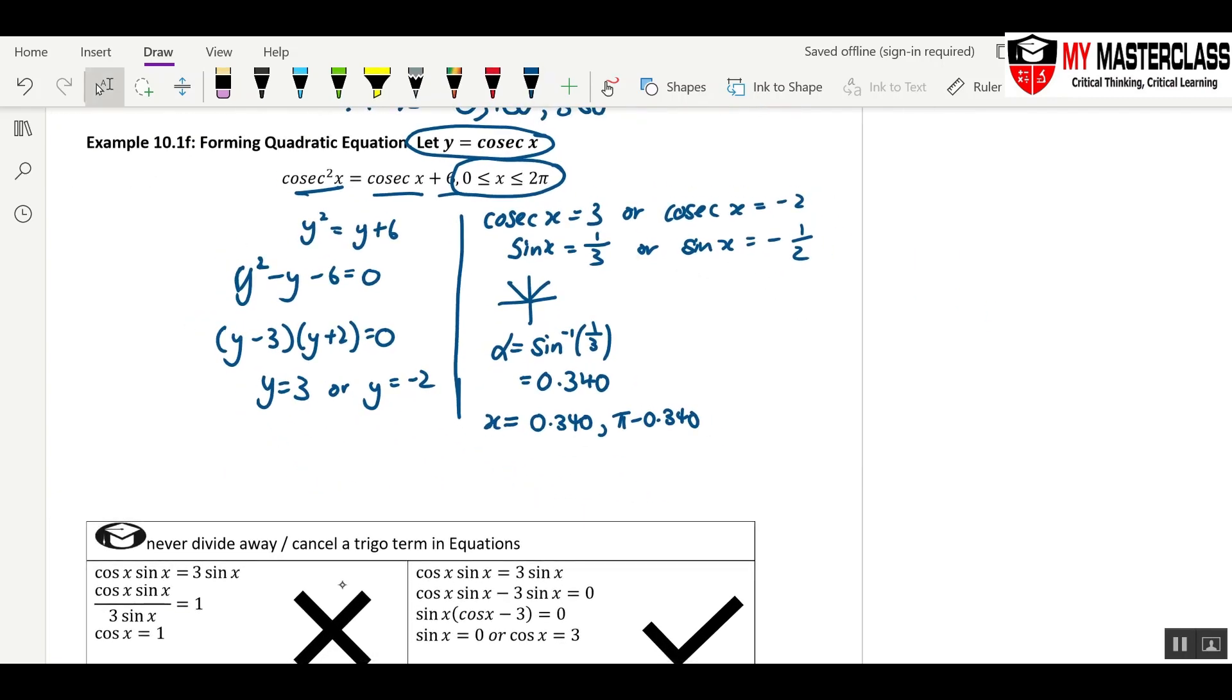Sine x equals to half. Do you remember half is in a special angle table? Then the basic angle is inverse sine half. When you inverse sine half, if you know that it's going to be 30 degree, then you'll know that it's going to be pi over 6. This is in the third and fourth quadrant because of sine is negative.